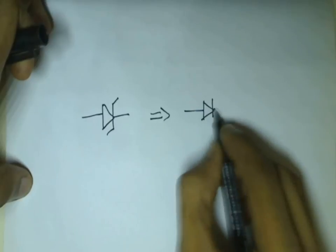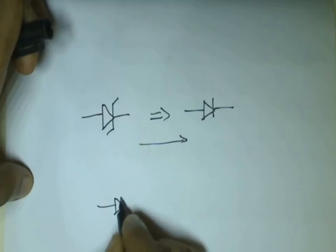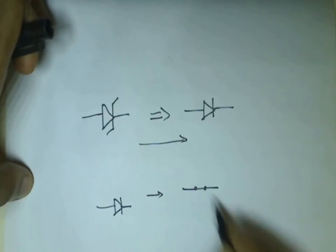A Zener diode is similar to a normal diode. That is, a normal diode functions as a short circuit in forward bias condition and open circuit in reverse bias condition.